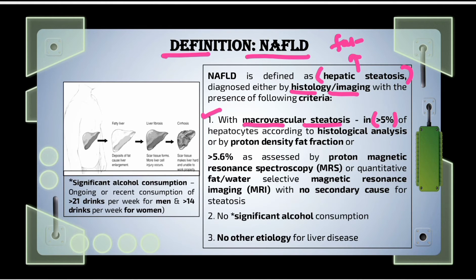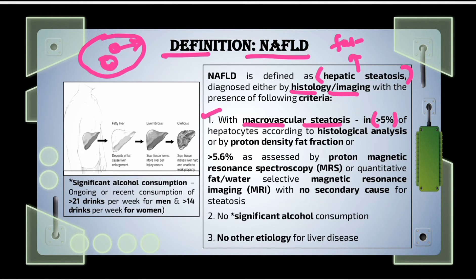Macrovascular steatosis means there is accumulation of a single large fat droplet or smaller well-defined fat droplets which occupy the cytoplasm of the hepatocytes. Because of this deposition of fat droplets, the nucleus of these hepatocytes is pushed towards the periphery.